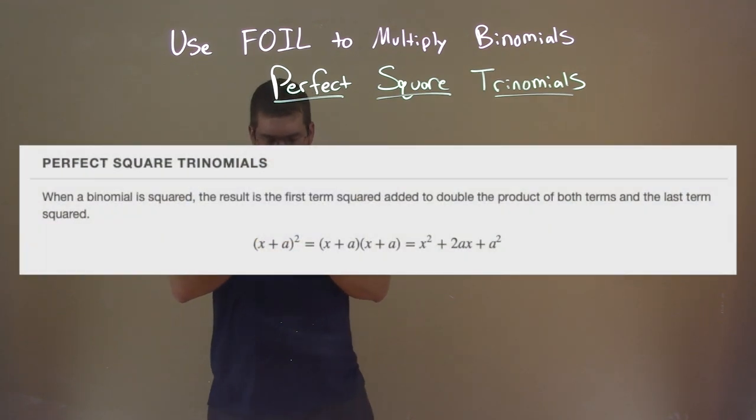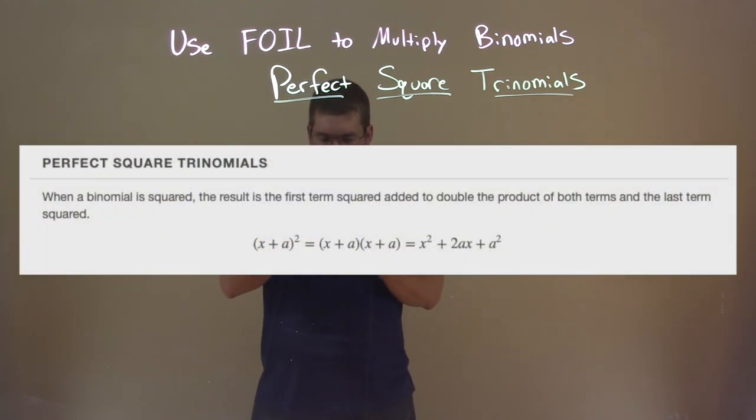Perfect square trinomials is when a binomial is squared. The result is the first term squared added to double the product of both terms and the last term squared.